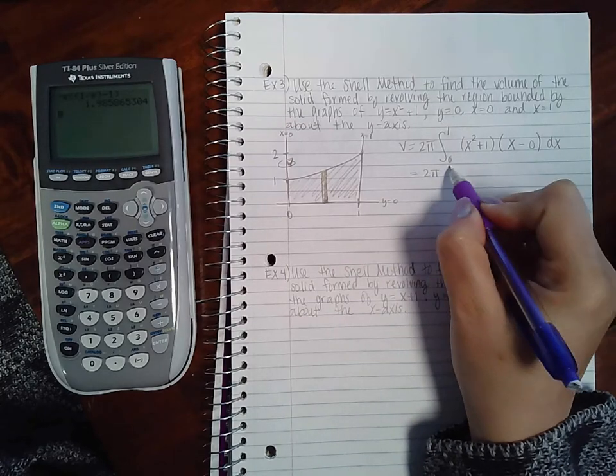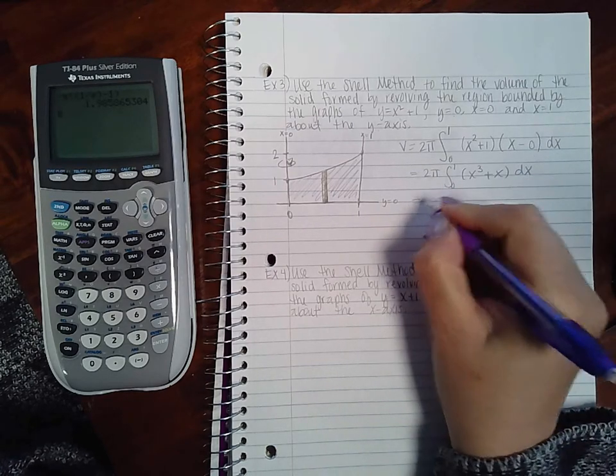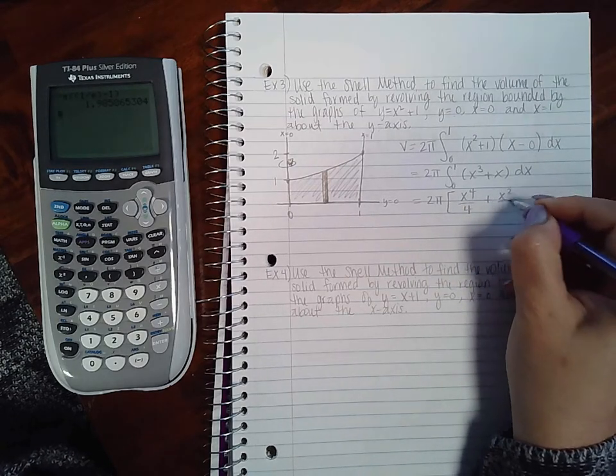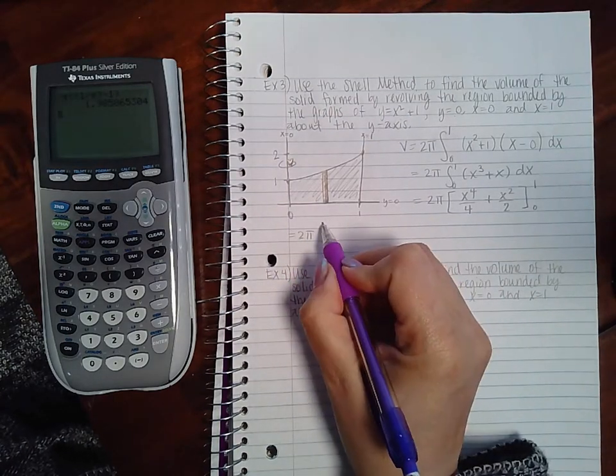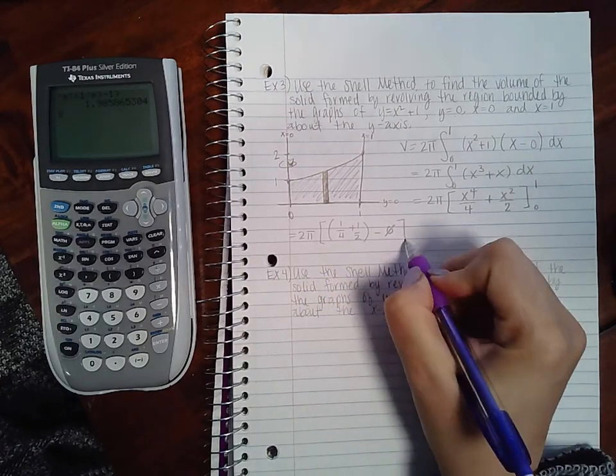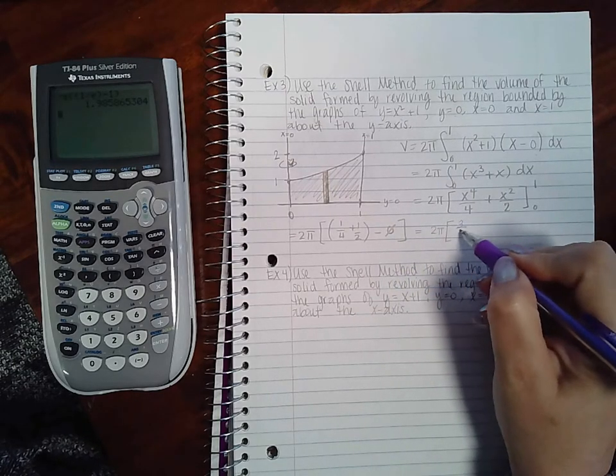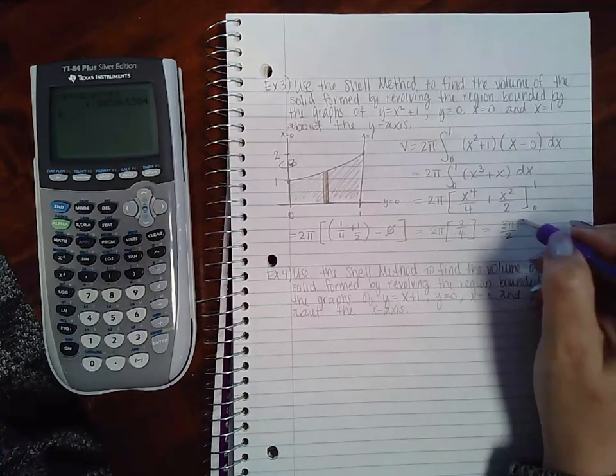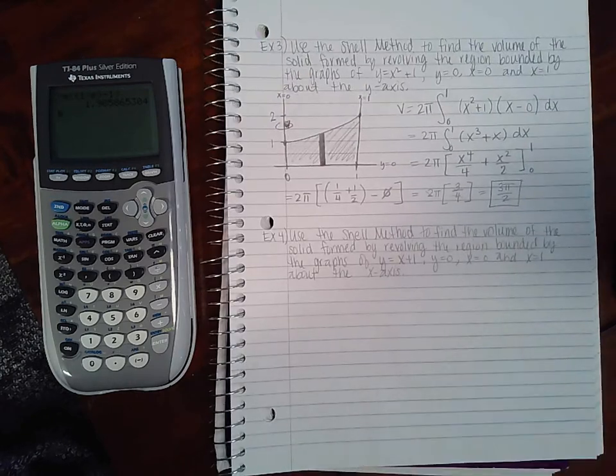So we get 2 pi x cubed plus x, x to the fourth over 4, x squared over 2, evaluated from 0 to 1. So we basically get 3 fourths. And if you reduce the 2 and the 4, you get 3 pi over 2 as your volume. So let's move on to example 4.